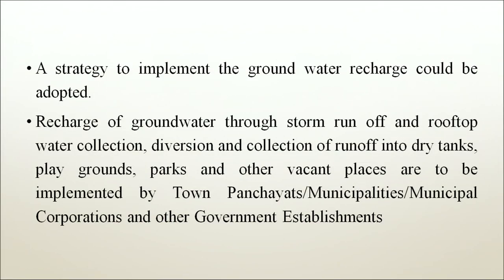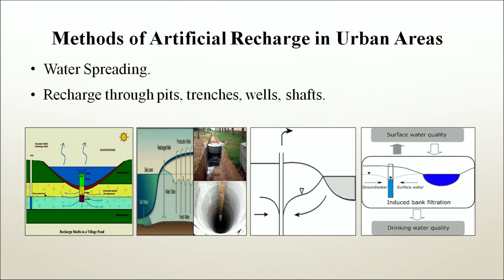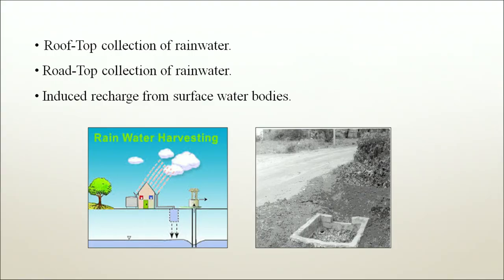A strategy to implement groundwater recharge could be adopted: recharge through storm runoff and rooftop water collection; diversion and collection of runoff into dry tanks, playgrounds, parks and other vacant places, to be implemented by town panchayats, municipalities, municipal corporations and other government establishments. Methods of artificial recharge in urban areas include water spreading, recharge through pits, trenches, wells and shafts, rooftop collection of rainwater, roadtop collection of rainwater, and induced recharge from surface water bodies.